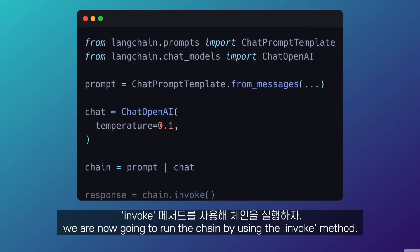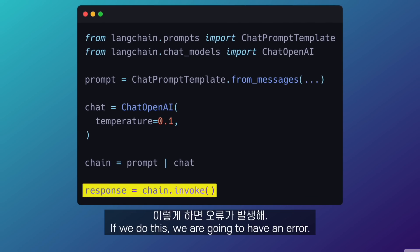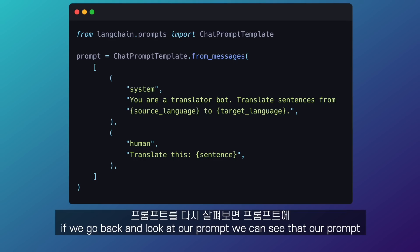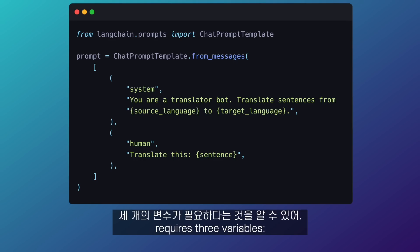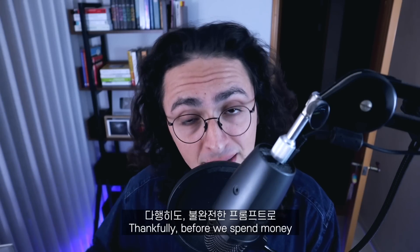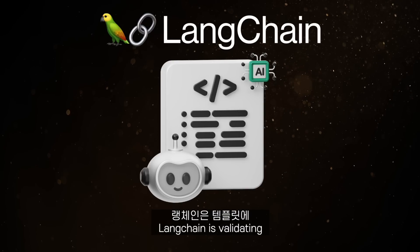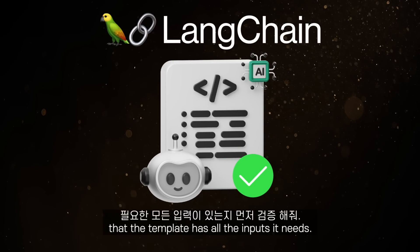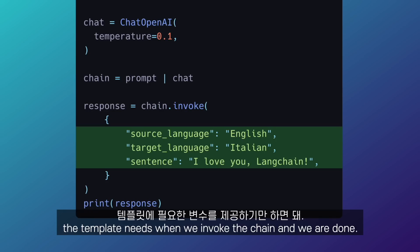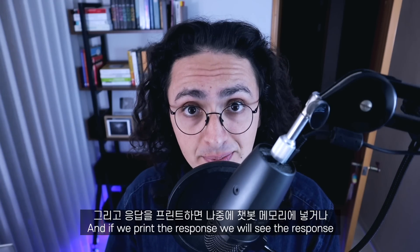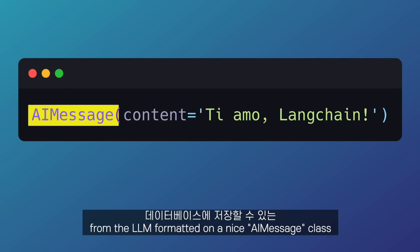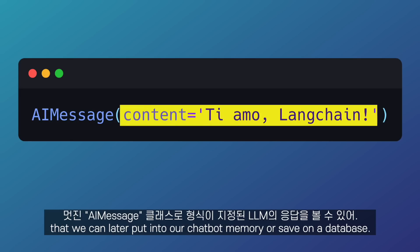Back to our code, we are now going to run the chain using the invoke method. If we do this right now, we are going to get an error, because LangChain also validates our inputs. If we go back and look at our prompt, we can see that it requires three variables: source language, target language, and sentence. Thankfully, before we spend money calling the AI with an incomplete prompt, LangChain validates that the template has all the inputs it needs. To fix this, all we have to do is provide those variables when we invoke the chain. And if we print the response, we will see the output from the LLM formatted in a nice AI message class that we can later put into our chatbot memory or save in a database.